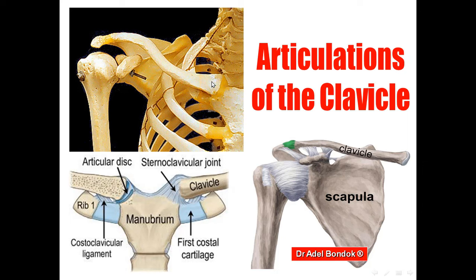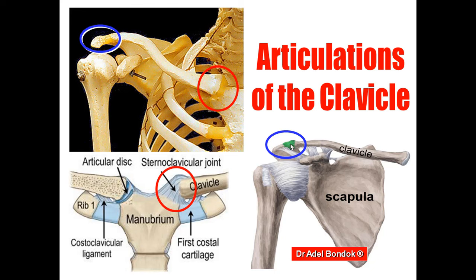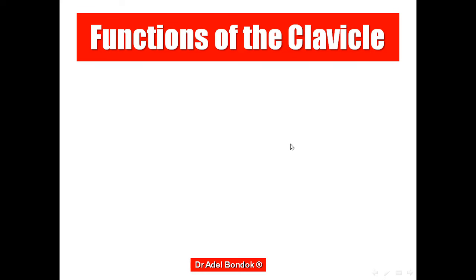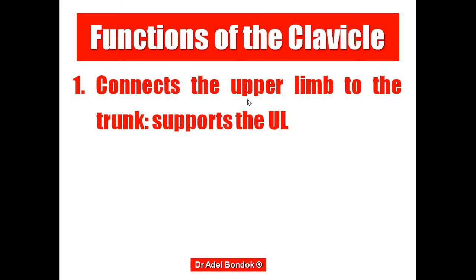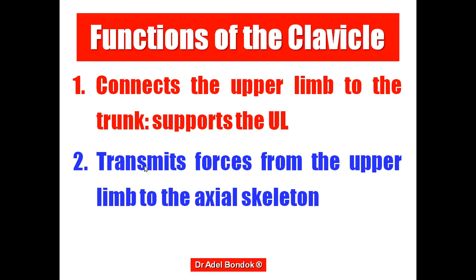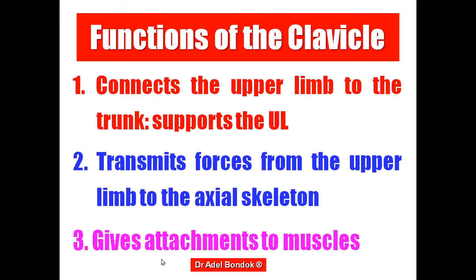The medial end articulates with the manubrium to form the sternoclavicular joint, a saddle synovial joint. The lateral end articulates with the acromion to form the acromioclavicular joint, a plane synovial joint. The functions of the clavicle: it connects the upper limb to the axial skeleton, supports the upper limb, transmits forces from the upper limb to the axial skeleton, and gives attachment to muscles.